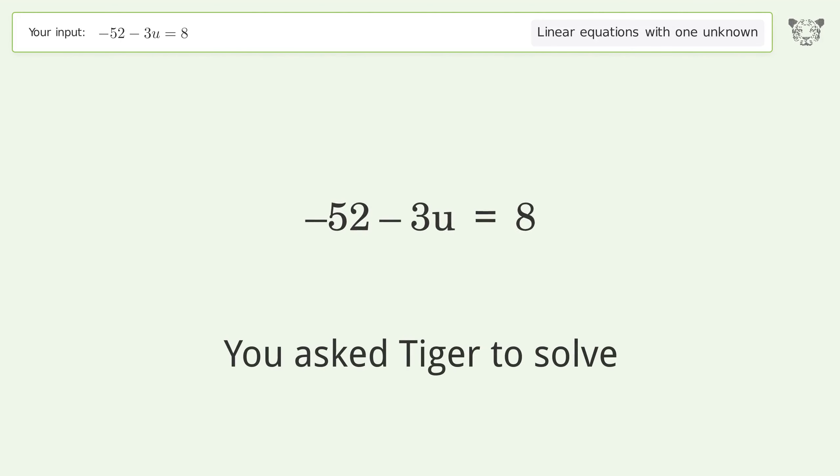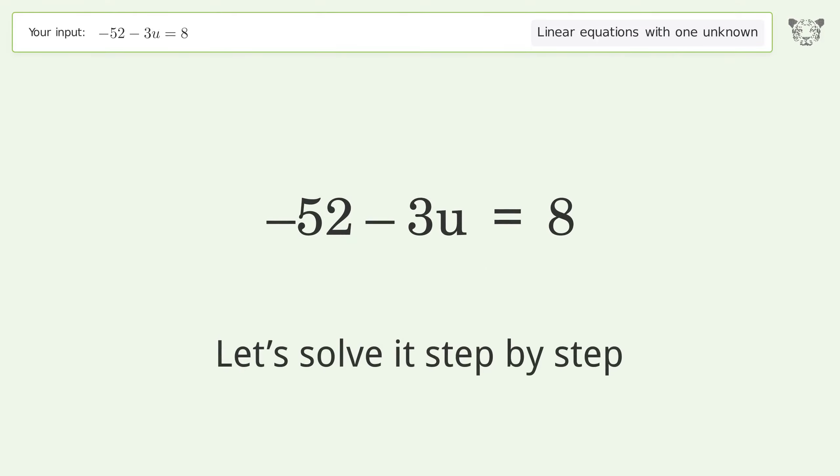You asked Tiger to solve this. This deals with linear equations with one unknown. The final result is u equals negative 20. Let's solve it step by step.